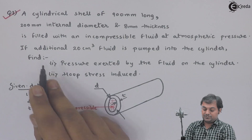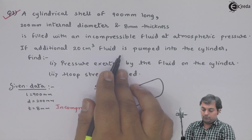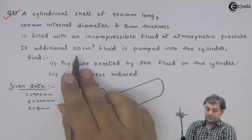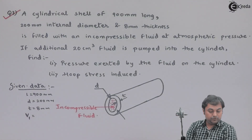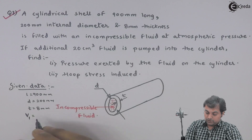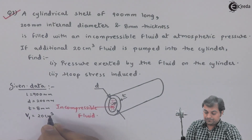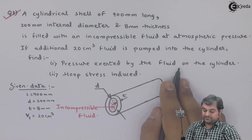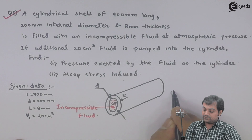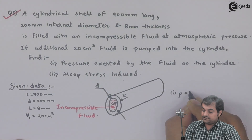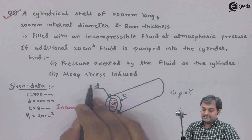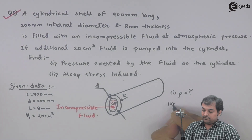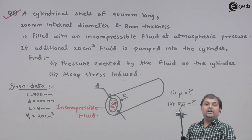Additional 20 cm³ fluid is pumped into the cylinder. We have to calculate the internal pressure developed — which exerts a force on the cylinder wall — and the hoop stress induced, that is the value of σ_h.